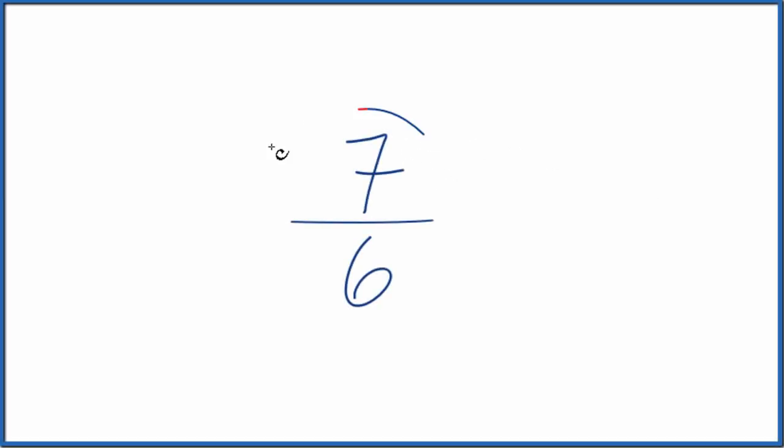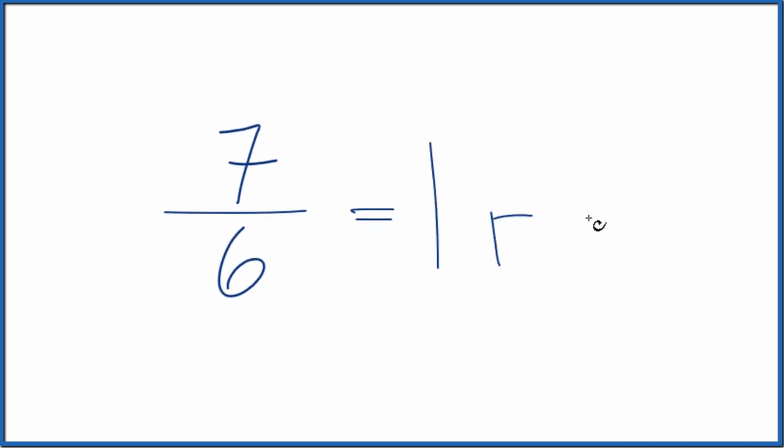If you need to write the fraction 7/6 as a mixed number in simplest terms, here's how you do it. What we'll do first, we're going to divide 7 by 6. So 6 goes into 7 just one time, and we have a remainder of 1.